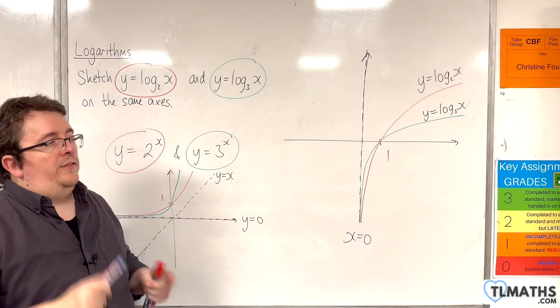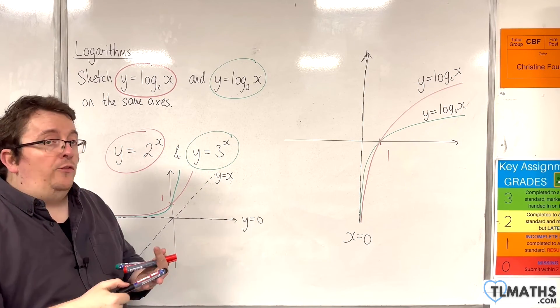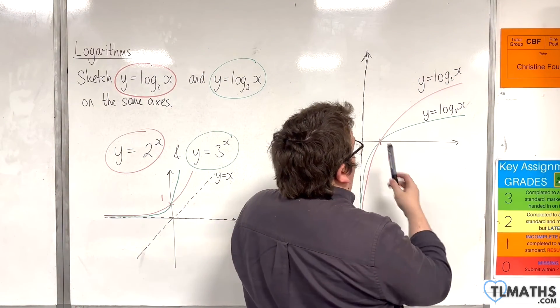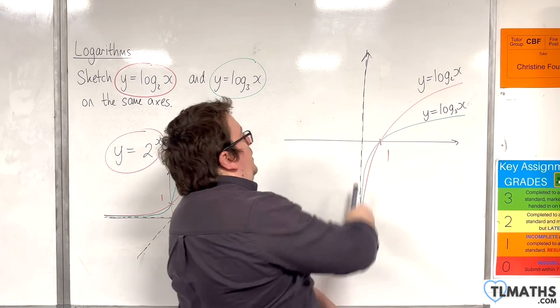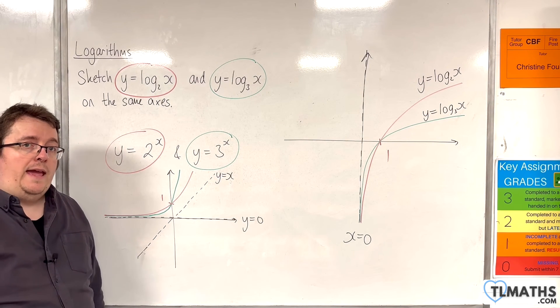Now, the important thing about this is that if you're sketching log base 2 of x, log base 3 of x, log base 5 of x, log base 10 of x, they're all going to have this common shape. They're all going to have x equals 0 as a vertical asymptote. They're all going to go through 1 on the x-axis.